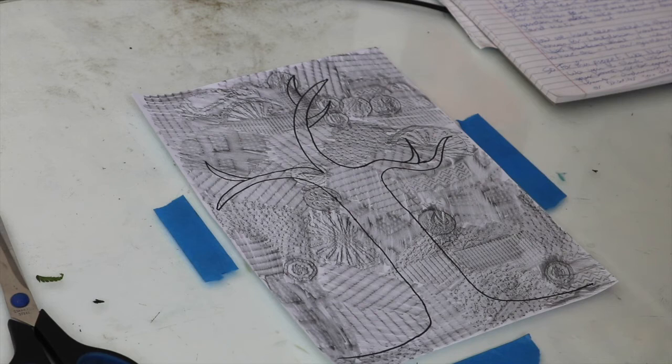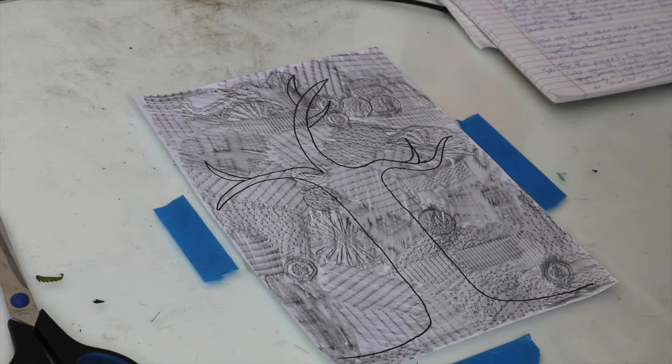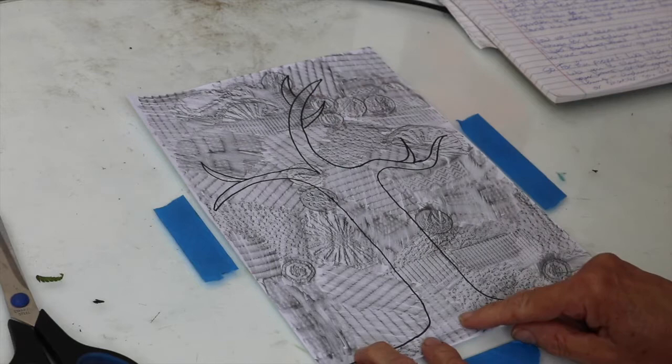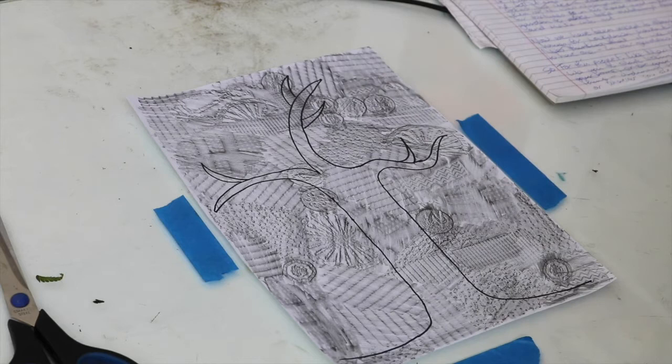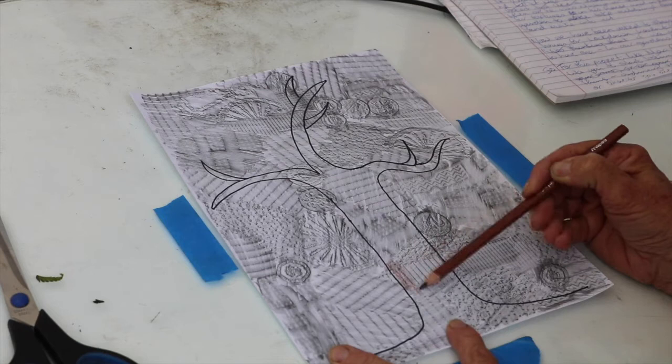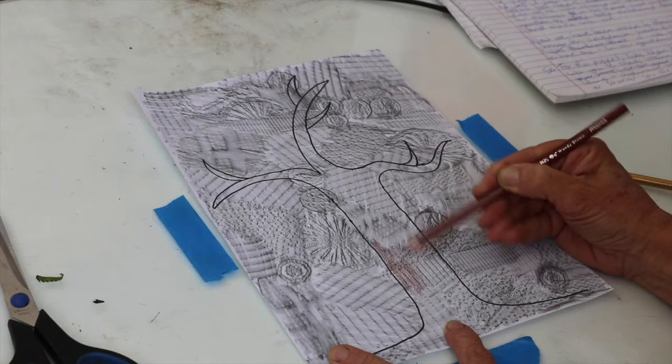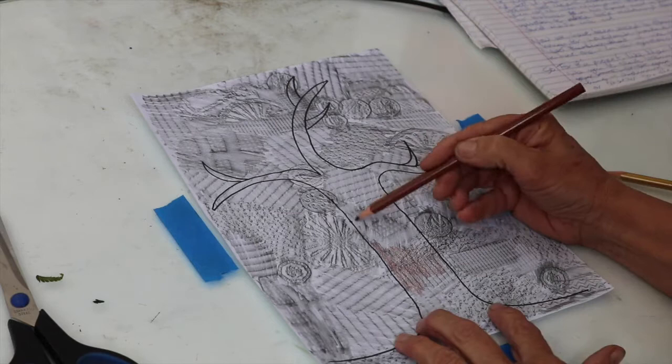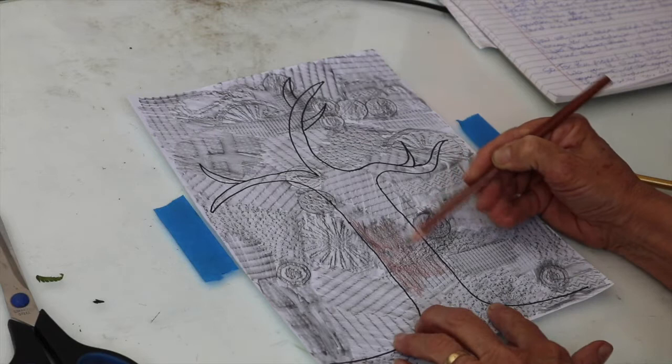As you can see, the textures are looking really beautiful and we have our actual tree shape. Now, put the lid on your fine liner because otherwise it will dry up. And I want to separate and bring the tree forward from the background. And so I decided to use a brown crayon. I've got two crayons, a darker brown and a lighter brown. I've gone with the darker brown, but I'm using it very, very lightly indeed. I don't want to get rid of my beautiful textures, but I want the tree to kind of come out from the background.